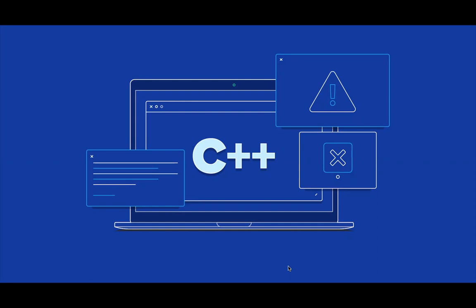I want you to understand this before we actually start the coding process. Now, those using phones — I've sent you a link in your Slack channel. Specifically those using Android phones, download the app called Droid C++. Check your Slack channel for the link.